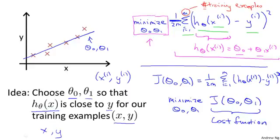So this cost function is also called the squared error function, or sometimes called the squared error cost function. And it turns out that, why do we pick the squares of the errors? It turns out that the squared error cost function is a reasonable choice and will work well for most regression problems.